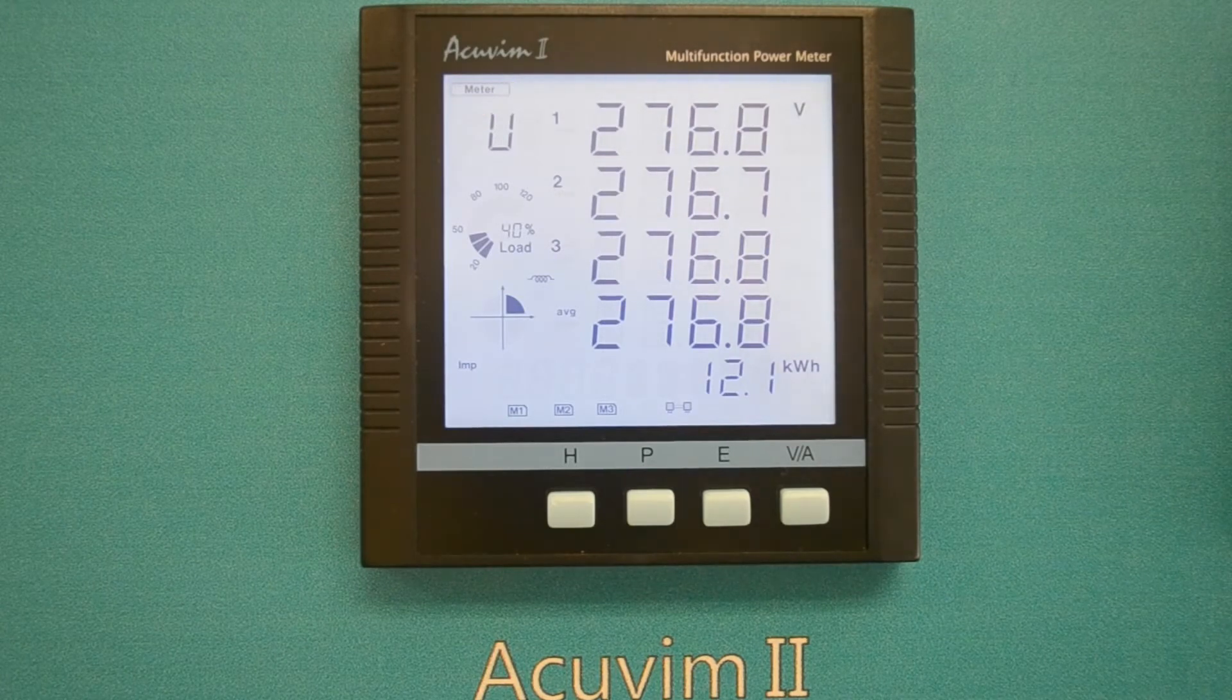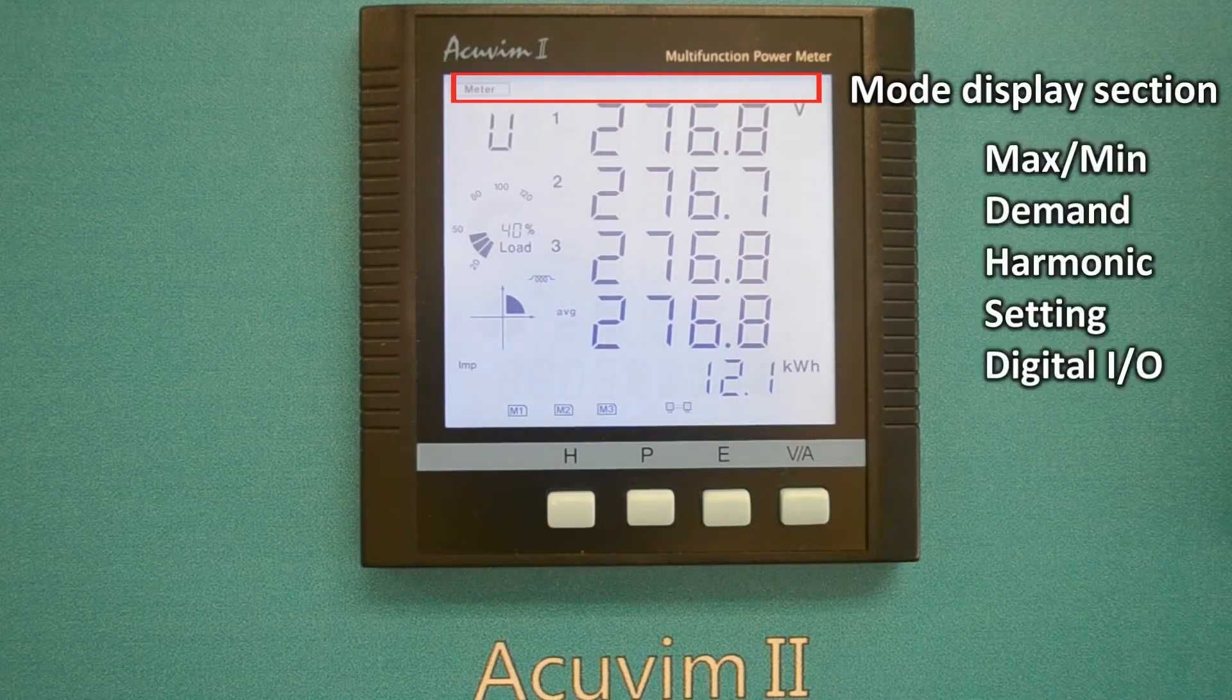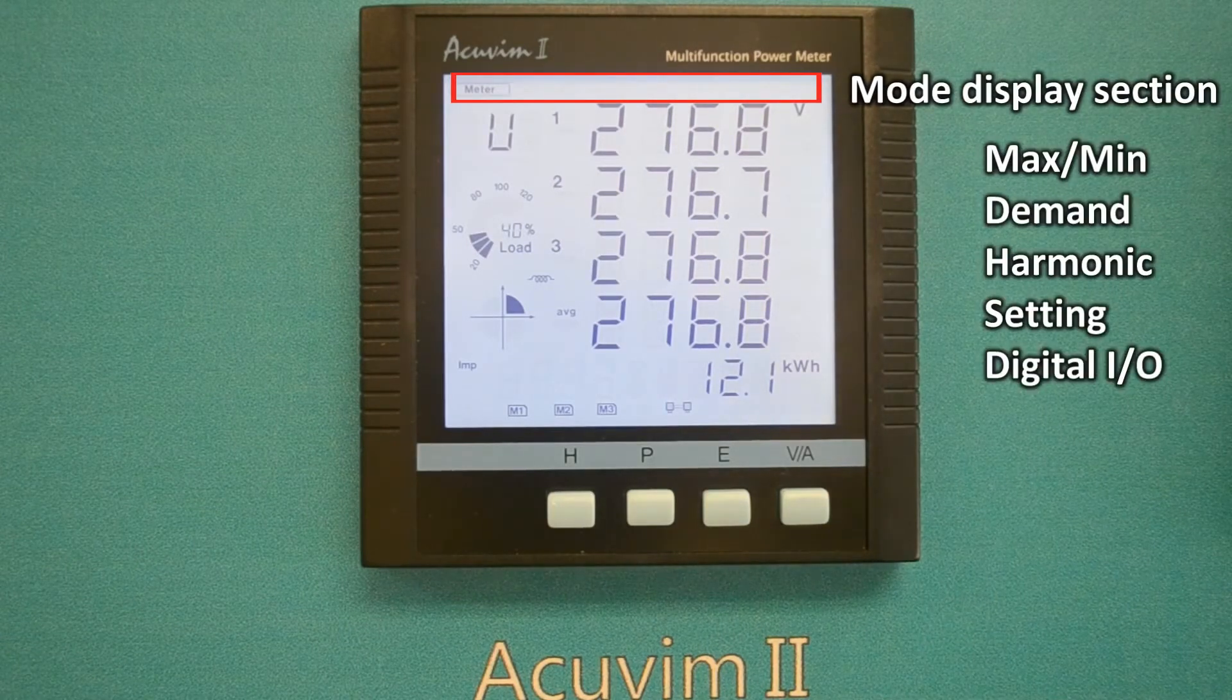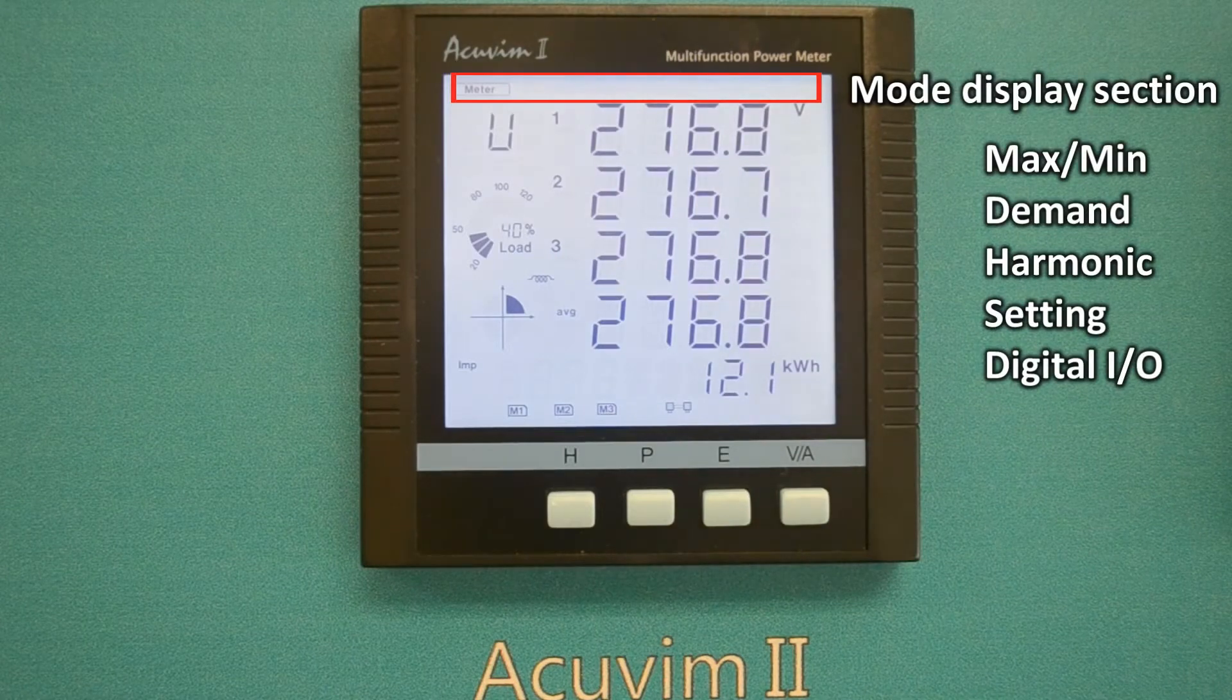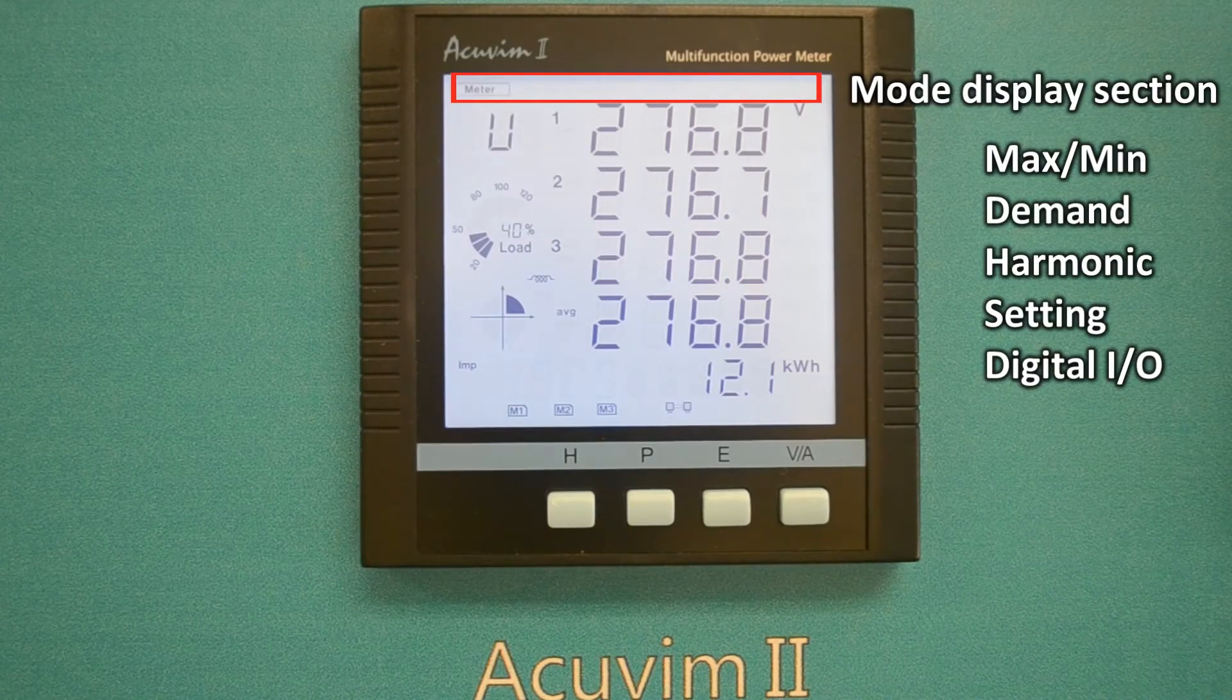On top of the meter icon, there are additional icons indicating other modes including MaxMin, Demand, Harmonic, Setting, and Digital I.O. We will cover these in a few moments as well.